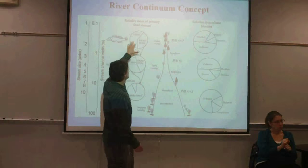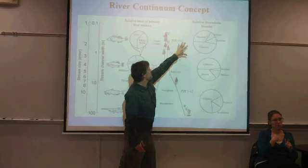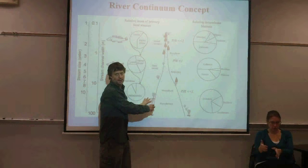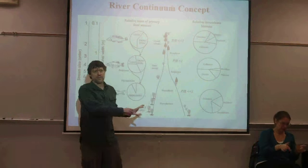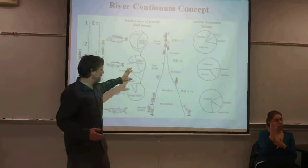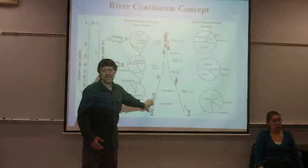You get a juxtaposition of a headwater-type community right next to a large river-type community, which is part of the reason why when floods come and flush stuff out, the catfish go towards those little streams and get the organisms that aren't adapted to dealing with those particular systems.